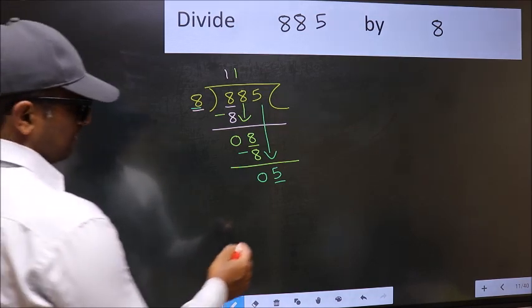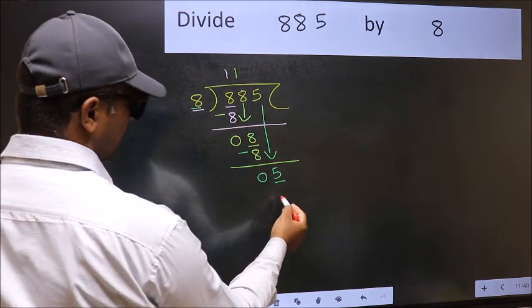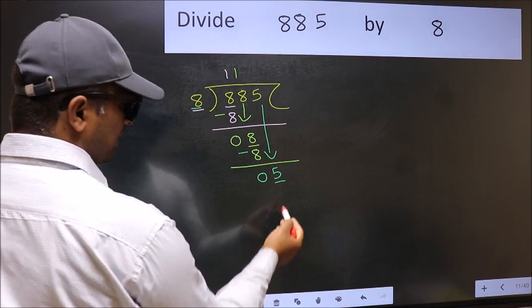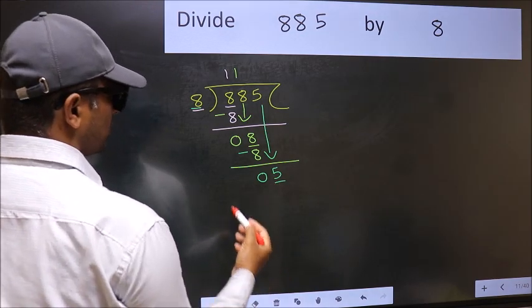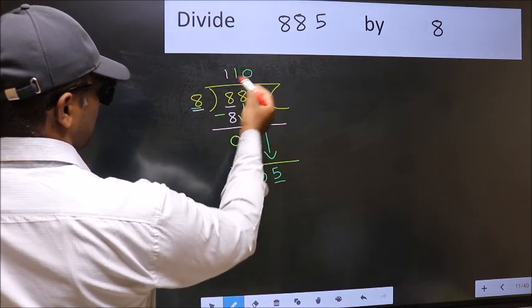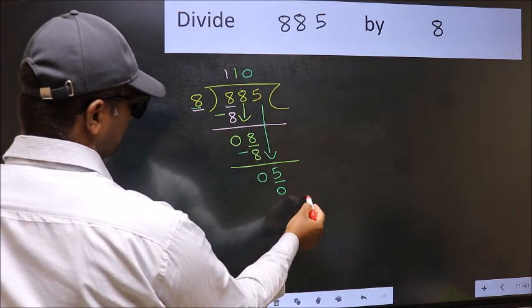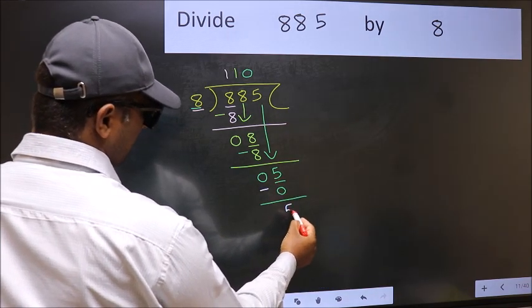If I take 1, we will get 8. But 8 is larger than 5. So what we should do is we should take 0. So 8 into 0, 0. Now you should subtract. 5 minus 0, 5.